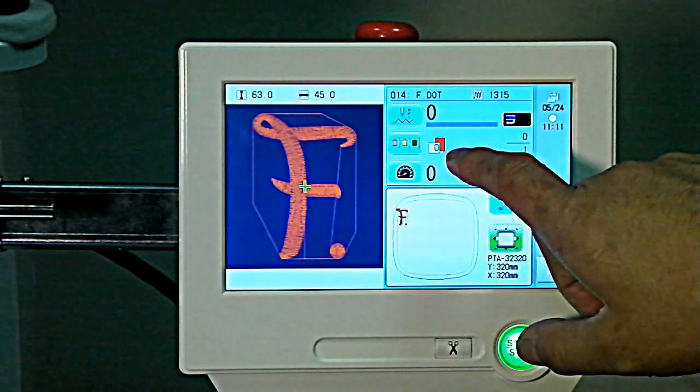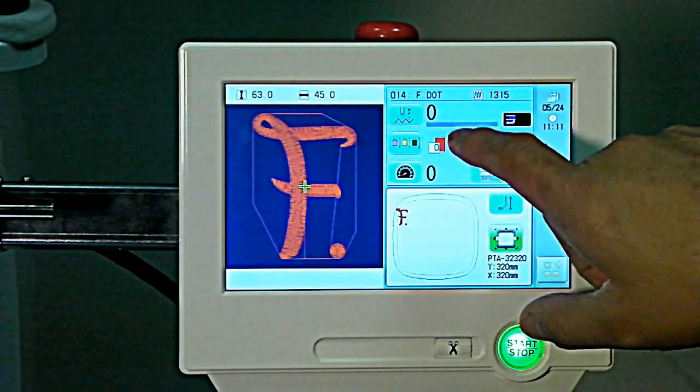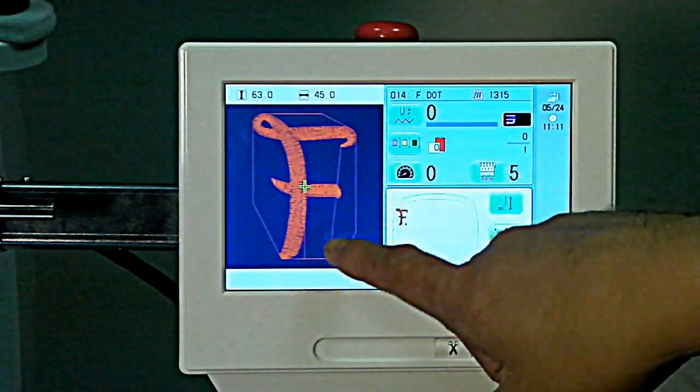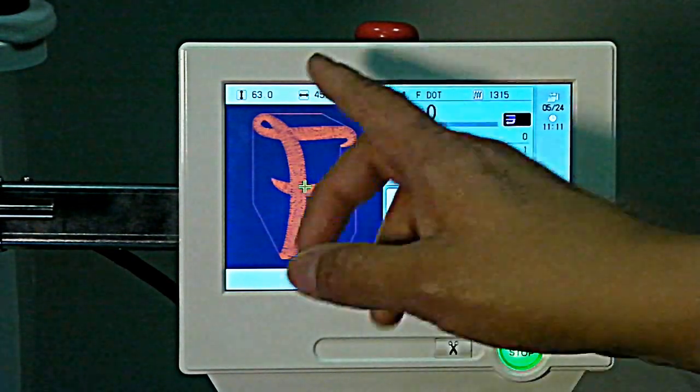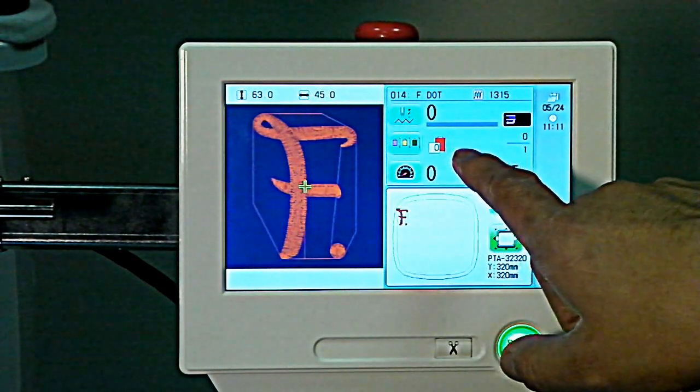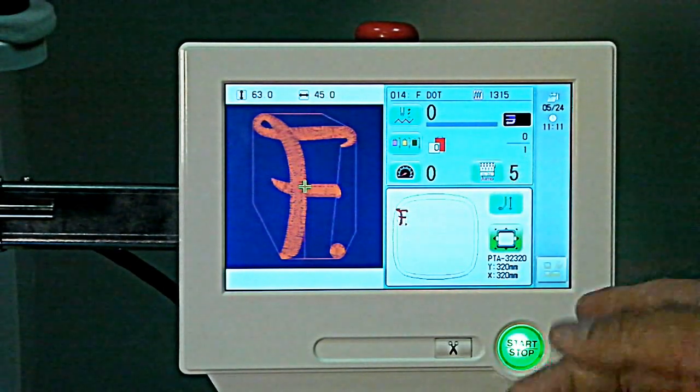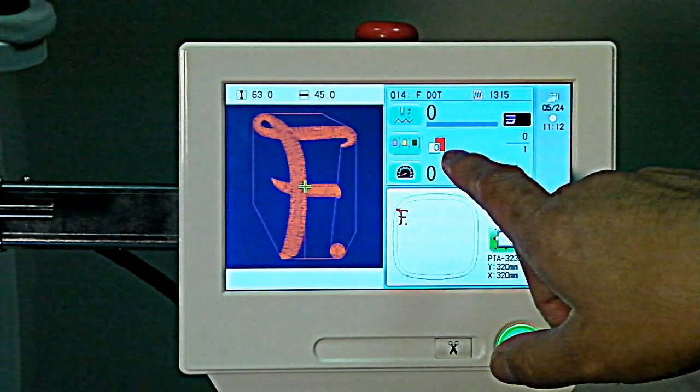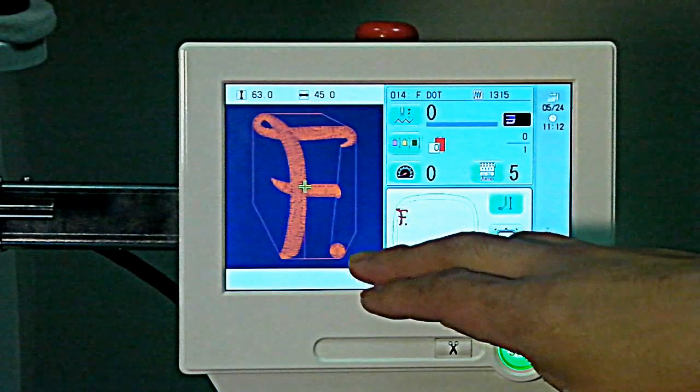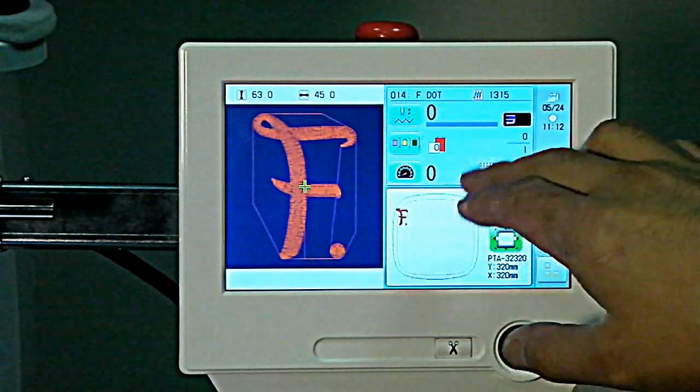There's also a section here that lets us assign the color thread cone that we're going to have sewing on this design. If this is a multi-color design, then we'll actually have several thread cones representing each of the color sections, and then we can assign whatever color we want to each of those sections.